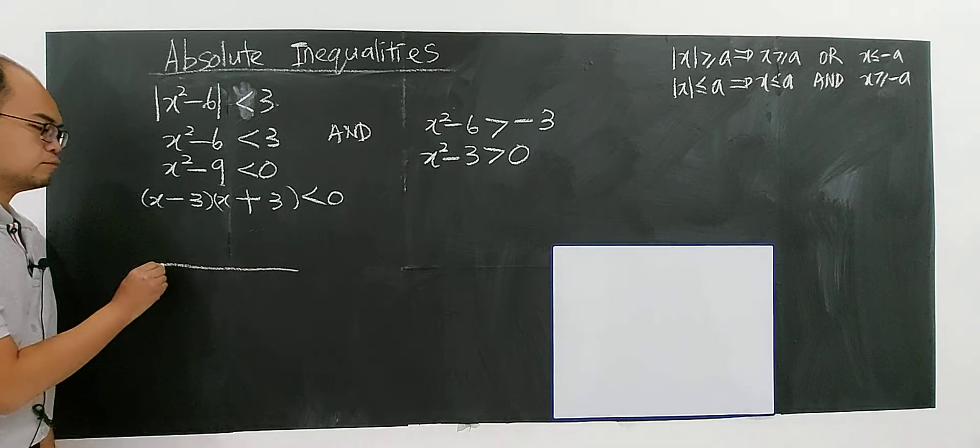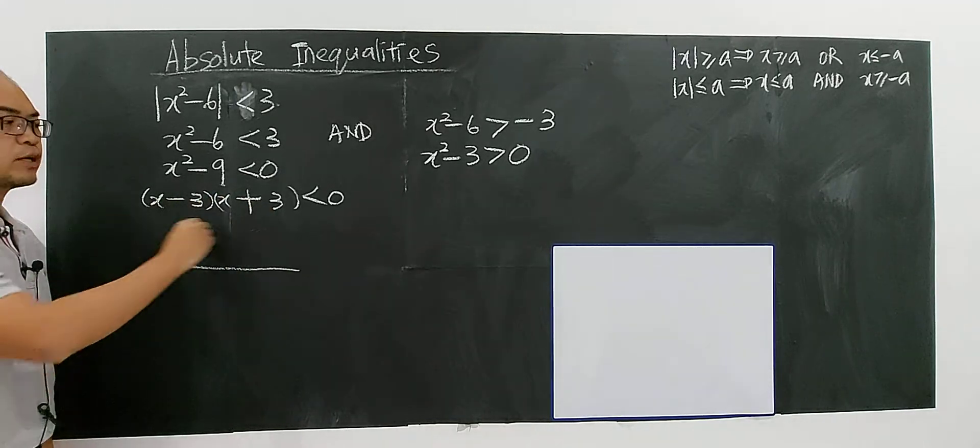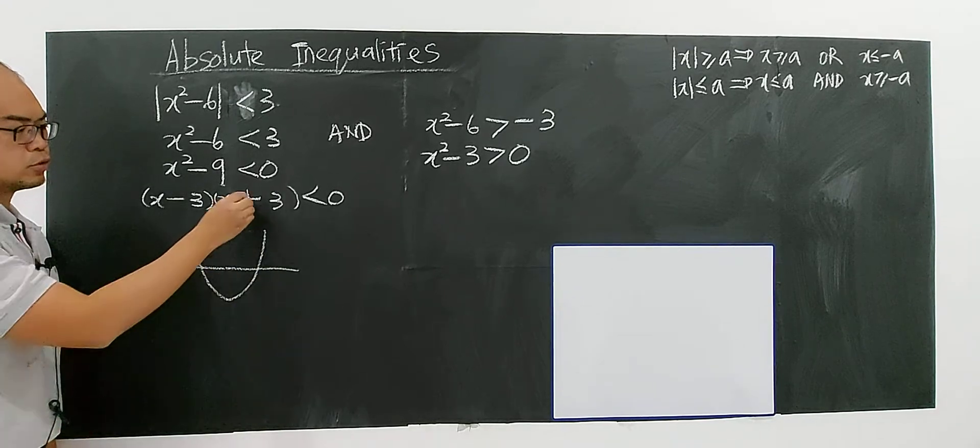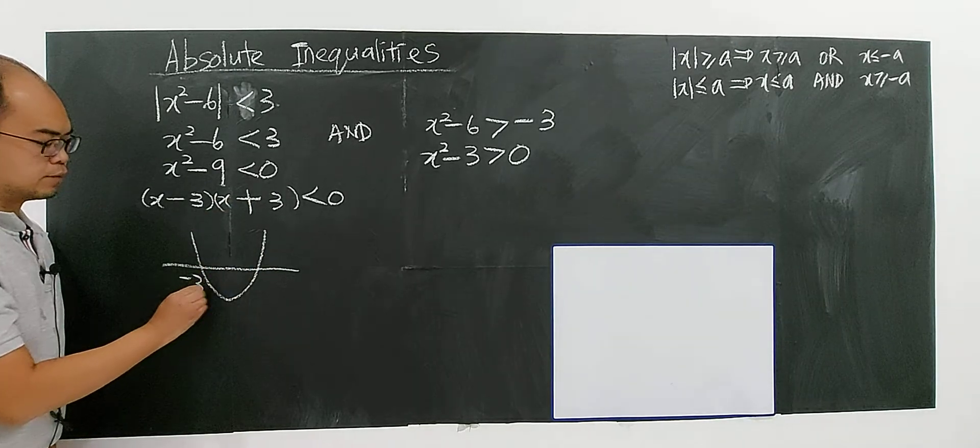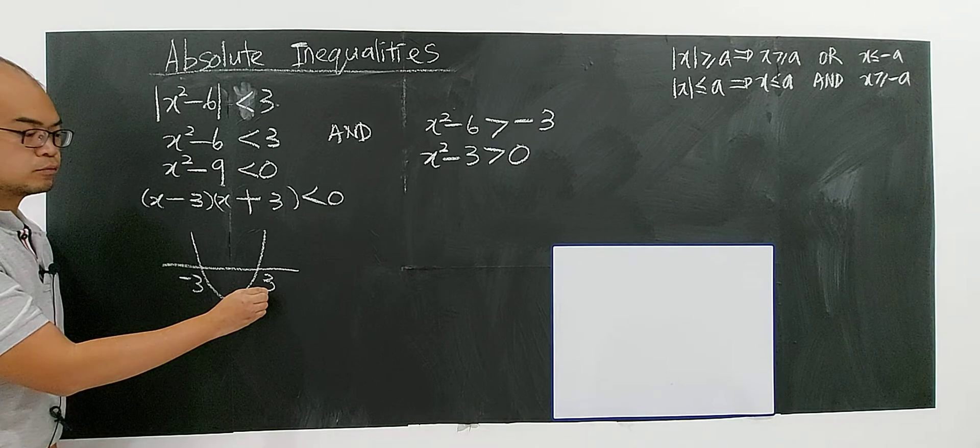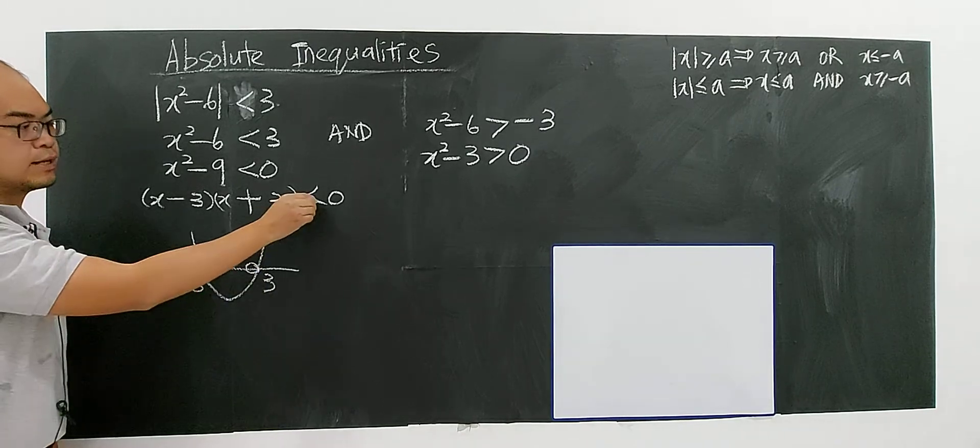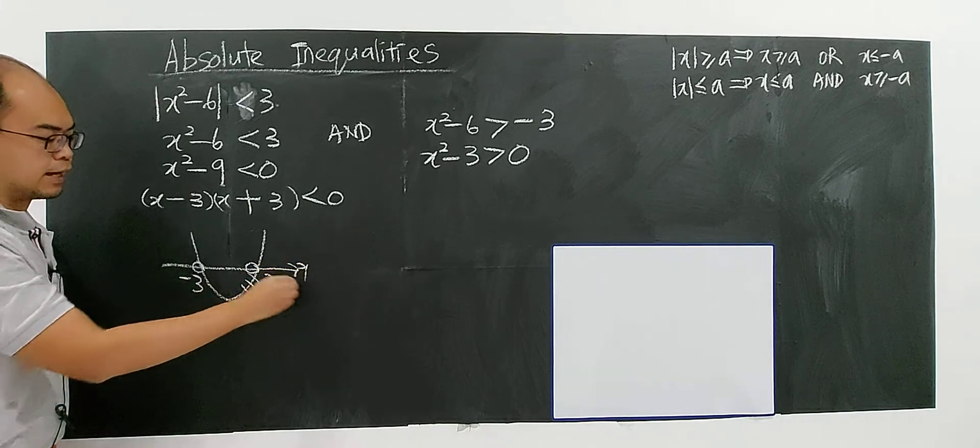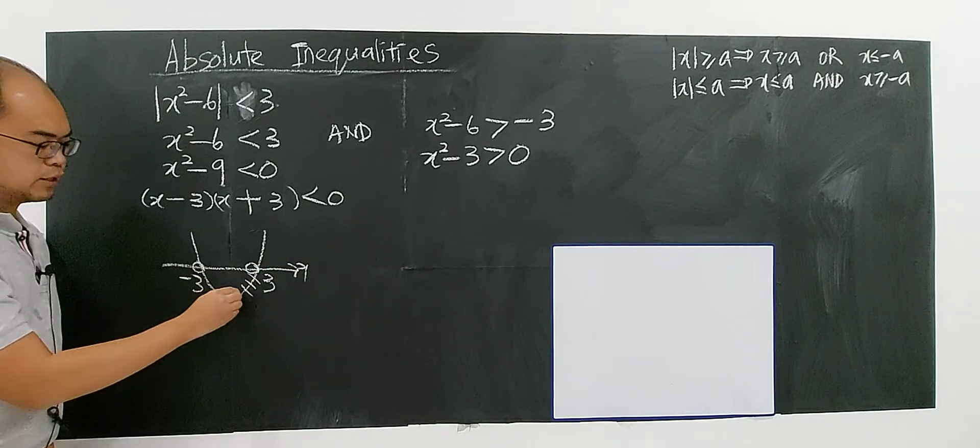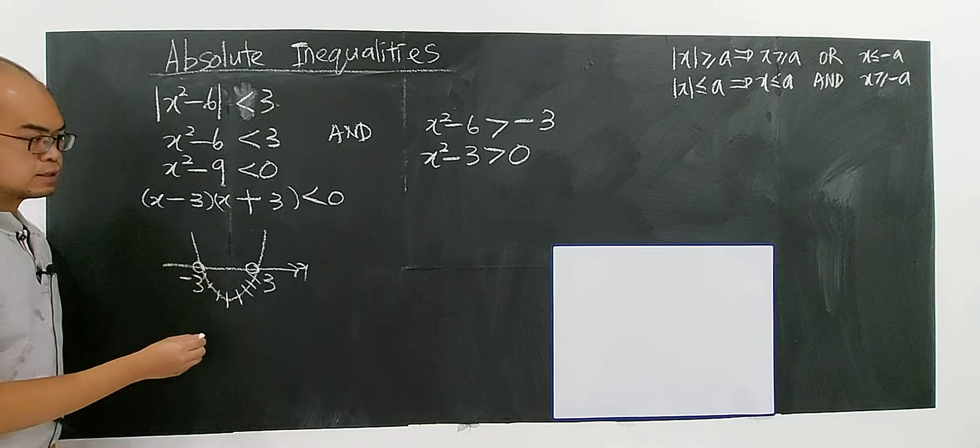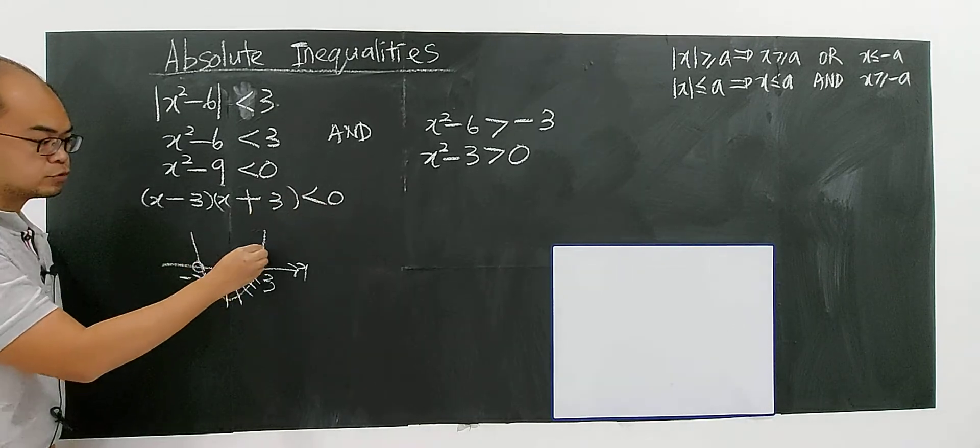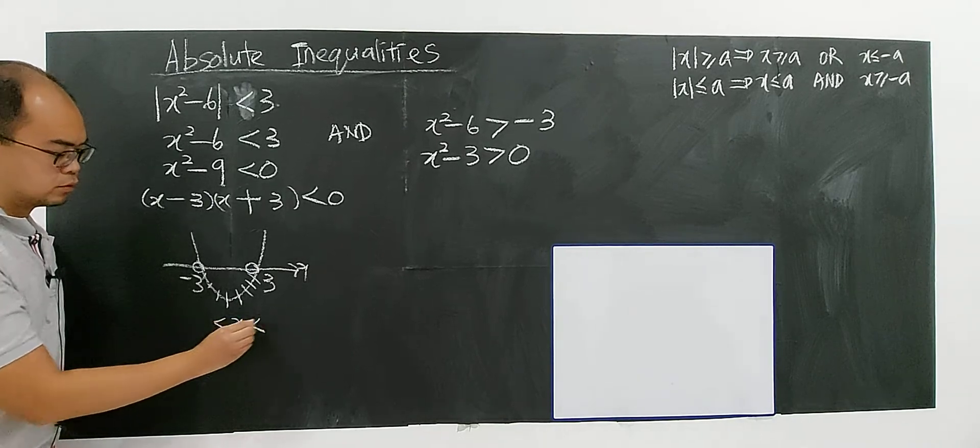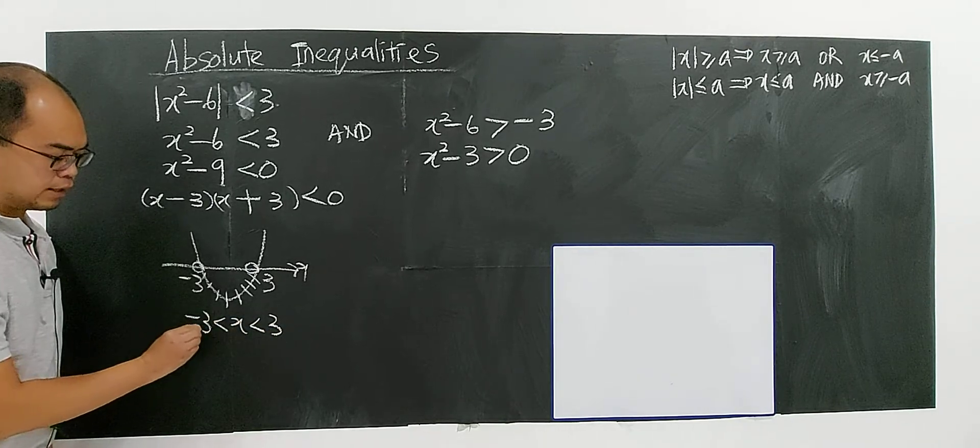Then you apply the graphical because this is a quadratic, right? You're solving a quadratic inequality. So you have a graphical approach so you have negative 3 and a positive 3 which is not included, and less than means below the x-axis, the curve below the x-axis. If this is greater I will choose the curve above the x-axis. So x is between 3 and negative 3.